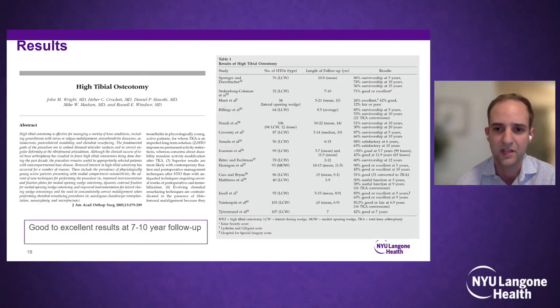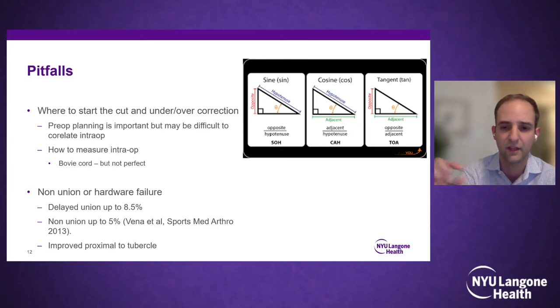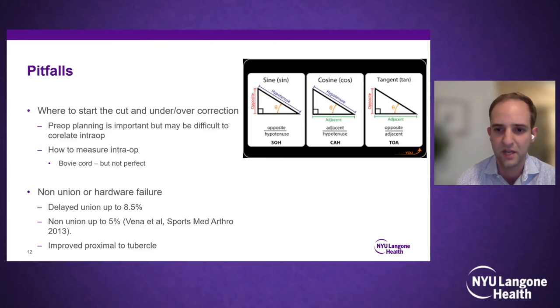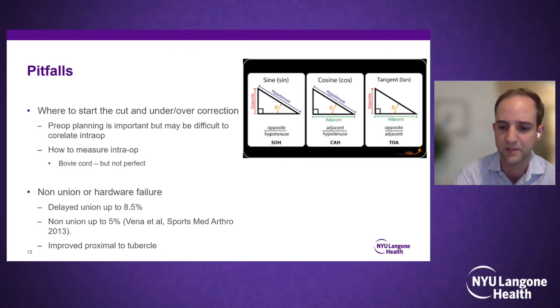High tibial osteotomy has yielded good to excellent results at mid- to long-term follow-up. However, there are multiple challenges and pitfalls. Determining the amount of correction can be tricky — trigonometry principles can be used, but intraoperative verification using a bovie cord or radiopaque rod can be less reliable in obese patients or those with joint laxity. Non-union and delayed union have been reported in up to 8%, though modern locking techniques have improved this overall.